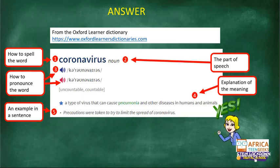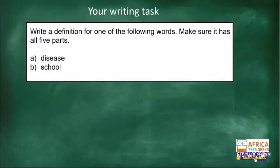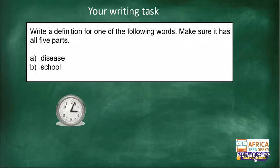Your first writing task: write a definition for one of the following words and make sure it has all five parts. You can choose either 'disease' or 'school.' I'll give you some time — write a definition with all five parts, then put your hand up.